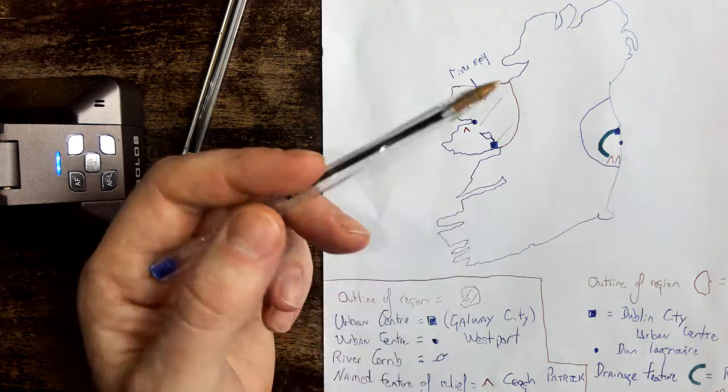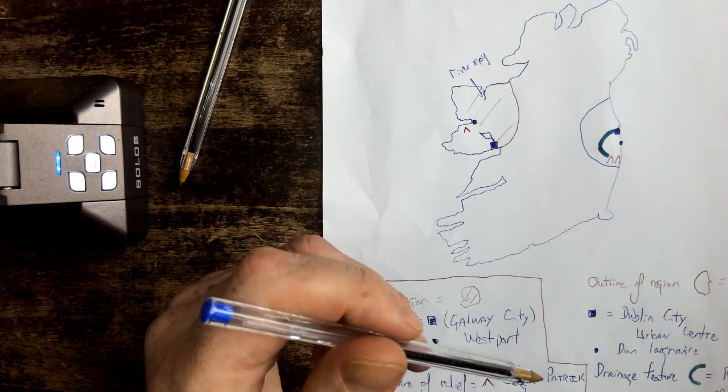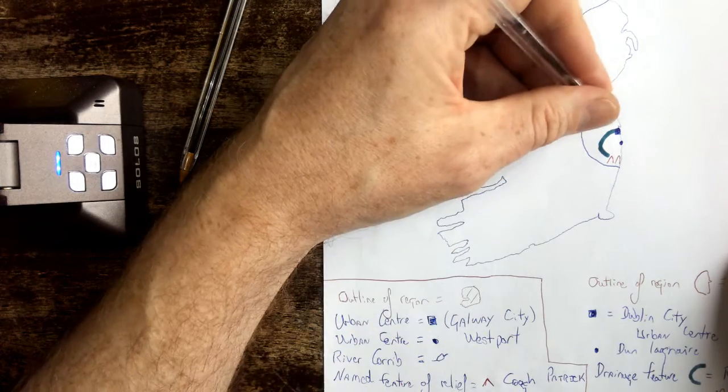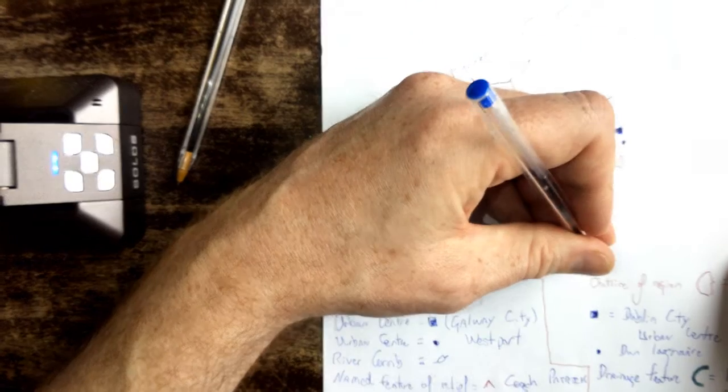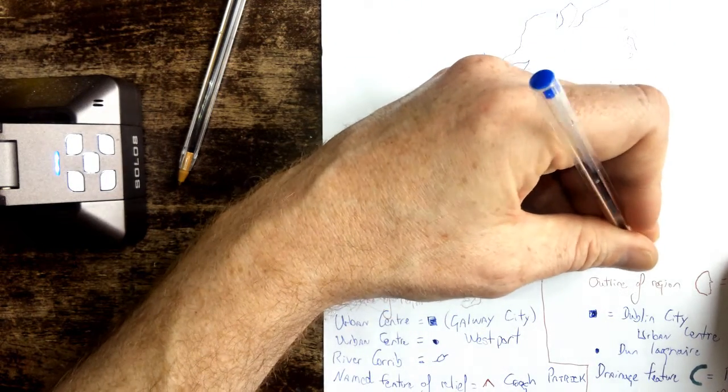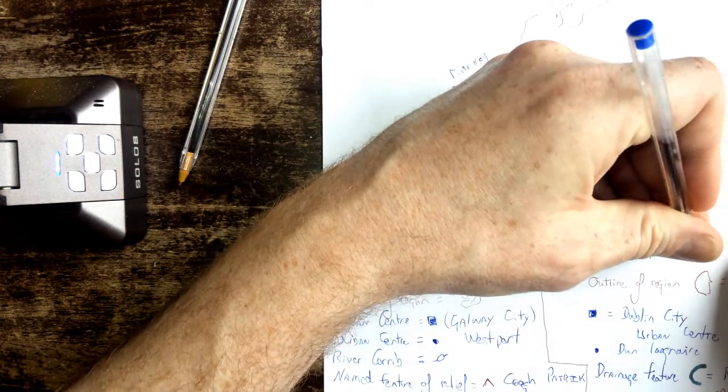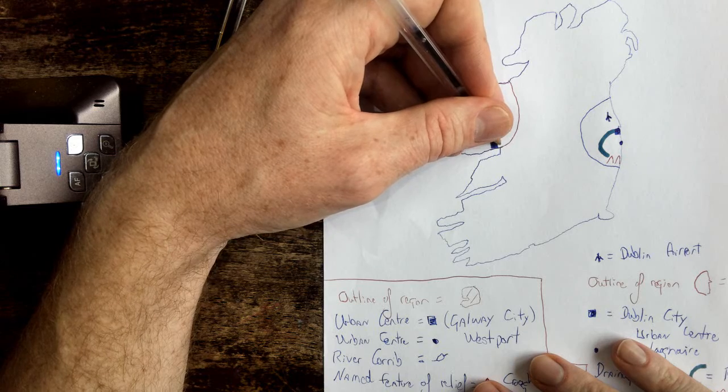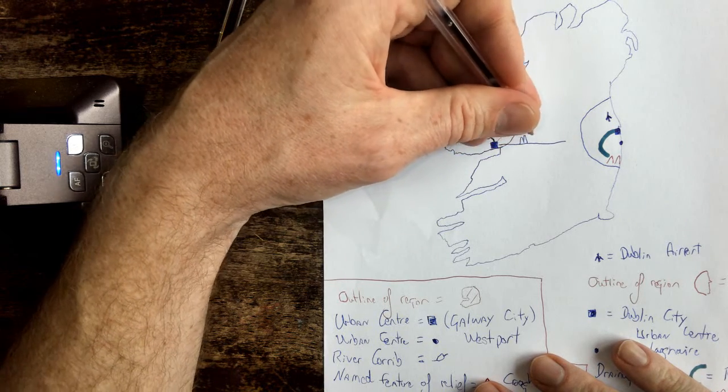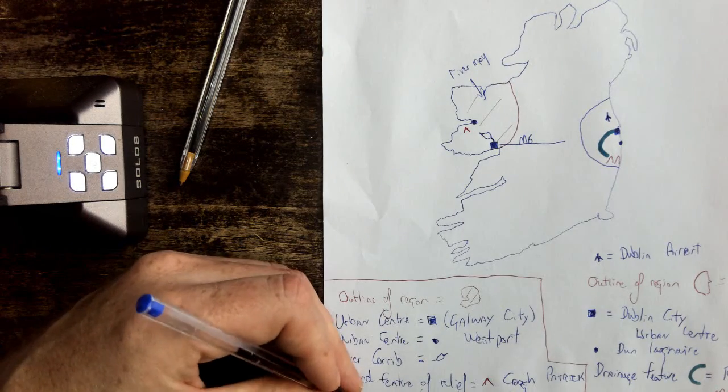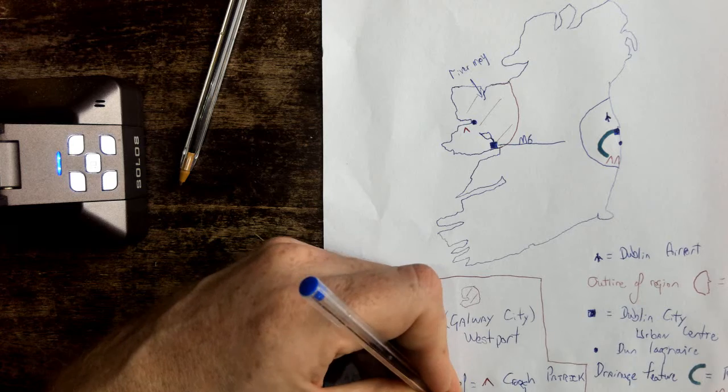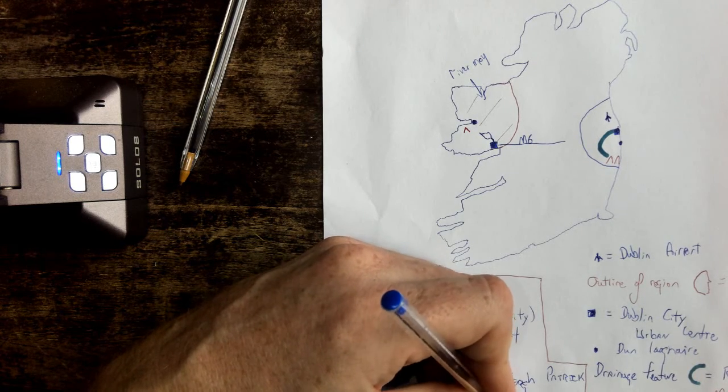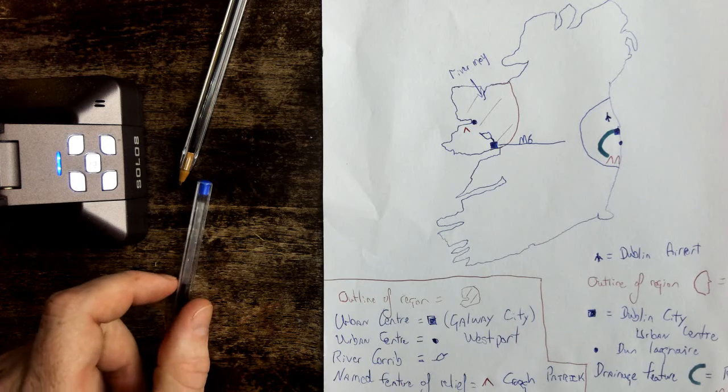And they could also ask maybe possibly to put in a transport route. So if I was asked for a transport route for Dublin, I'd put in Dublin airport up here. And I might put in Knock airport, or I can put in the M6 motorway that leaves Galway to head to Dublin, the M6. So transport, and the symbol for that would be just the city and the road leading towards Dublin.